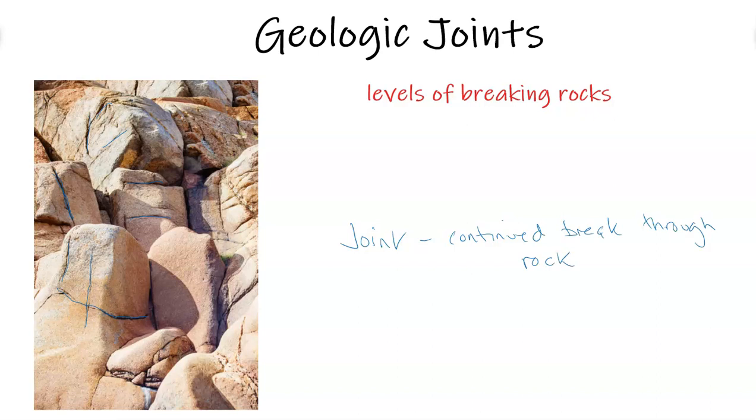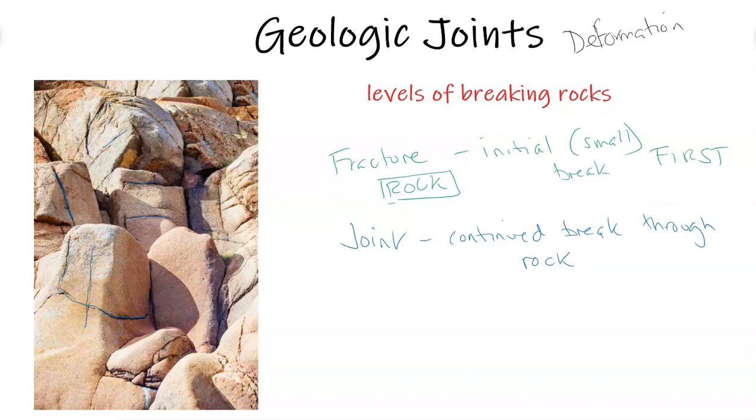But there is a part before: the fracture. The fracture is the initial smaller in size, smaller break that occurs first. Now rocks are pretty solid by their nature, composition, and by density. So how do we break these rocks? We've got to discuss something very cool, which is called deformation: to deform the rock, to change its shape, to move it. Deformation happens in three ways.